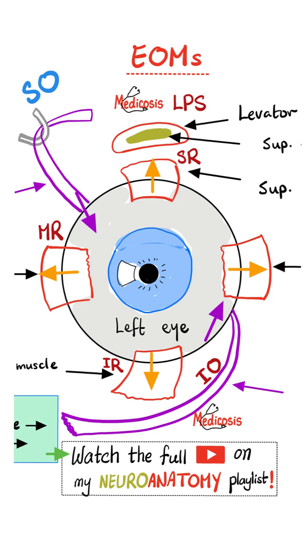While leaving the superior oblique and the lateral rectus muscles to cry to their therapists. The superior oblique is going to cry to the trochlear, and the lateral rectus will cry to the abducens. Go to my neuroanatomy playlist to watch all the videos on the cranial nerves.